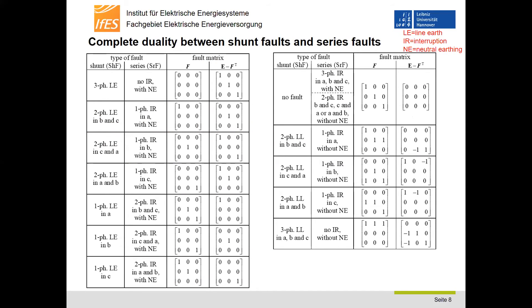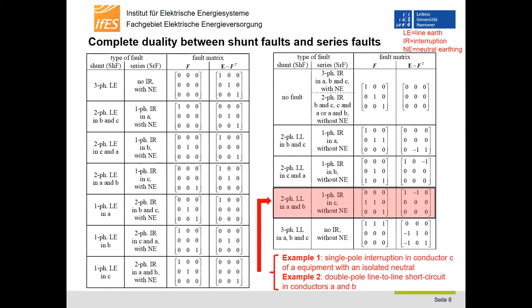A table is presented which shows the complete duality between shunt faults and series faults and the corresponding fault matrices. In particular, the duality between line-to-line short circuits and the corresponding fault matrices is shown on the right-hand side. The first example deals with an ideal single-pole interruption in conductor C of an equipment with isolated neutral, and the second example deals with an ideal double-pole line-to-line short circuit in conductors A and B. Both faults use the same fault matrix, as highlighted in red in the table.